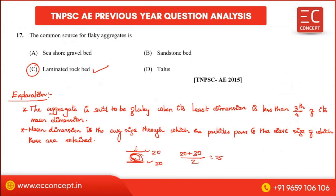So for example, if a particle passes a 25 mm sieve, the mean dimension is the average of the passing sieve size and the retaining sieve size. The least dimension of a flaky particle is less than 3/4 of that mean dimension. The most common source of flaky aggregate is laminated rock.